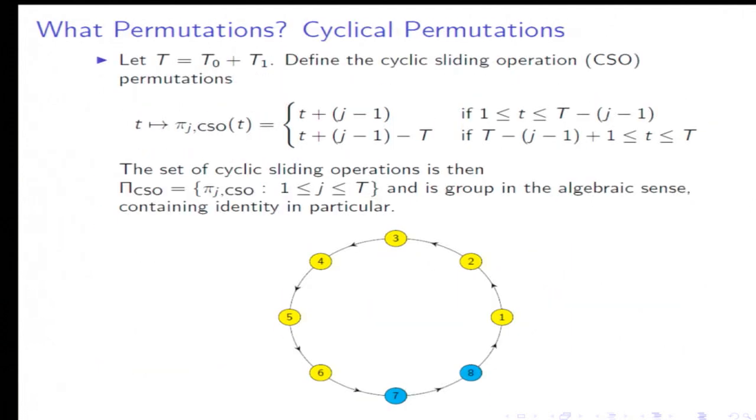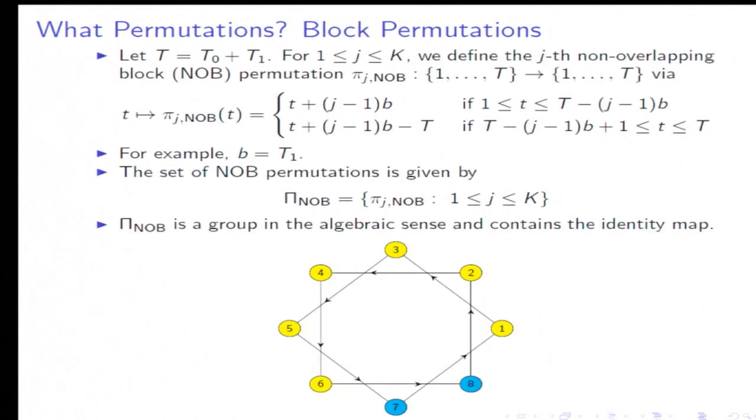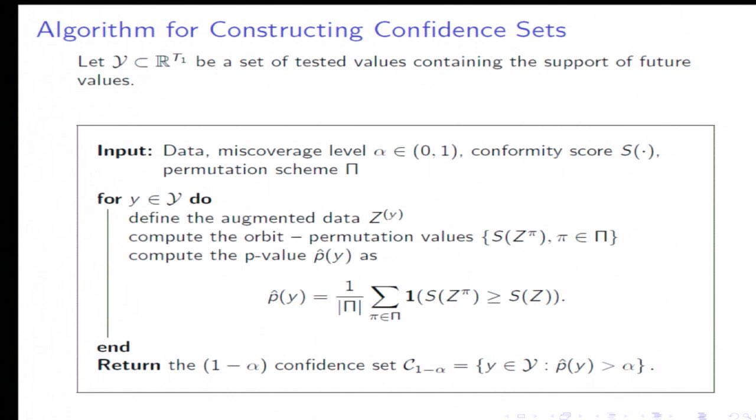Both of these permutations are groups, which is actually important for some of the results. Once you have these permutations defined, you run the algorithm. The inputs are data, miscoverage level alpha, you specify the statistic, the permutation group, and then you run a loop over the test values. First you define the augmented data Z of Y, then you compute the orbit, you compute the permutation values.